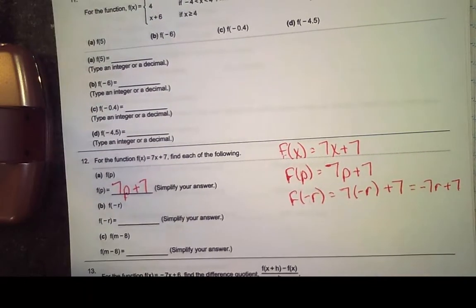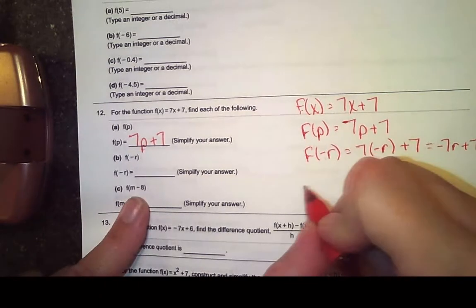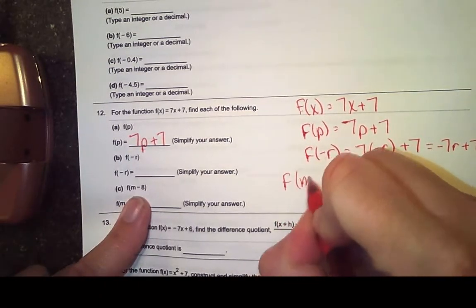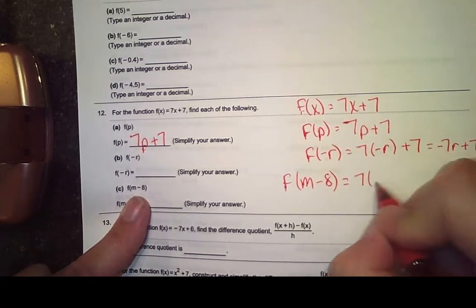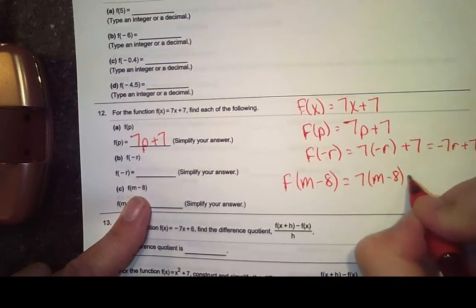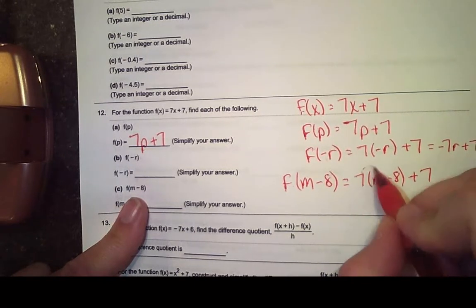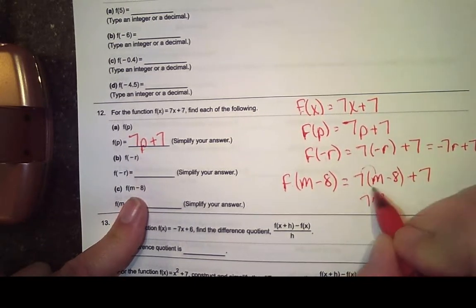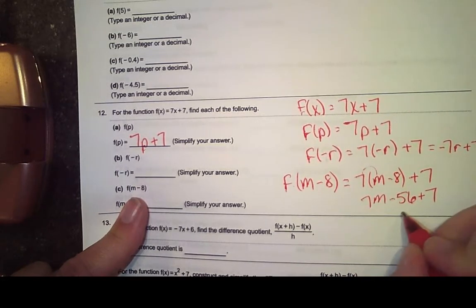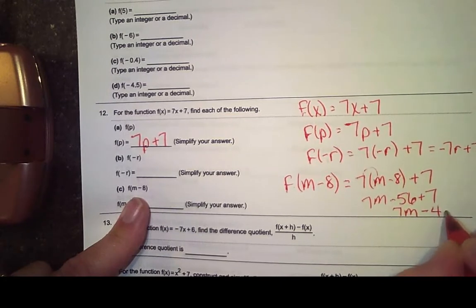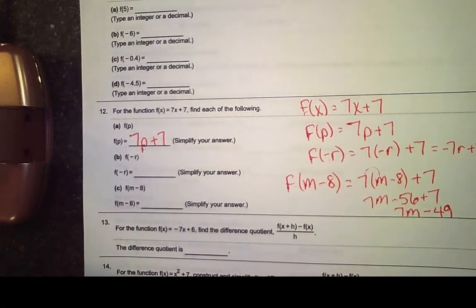Then we have f of m minus 8 — wherever there's an x, put m minus 8. So instead of 7x I do 7 times (m minus 8) plus 7. You can leave it like that or clean it up. Distributing gives 7m minus 56 plus 7, which equals 7m minus 49. That's your final answer.